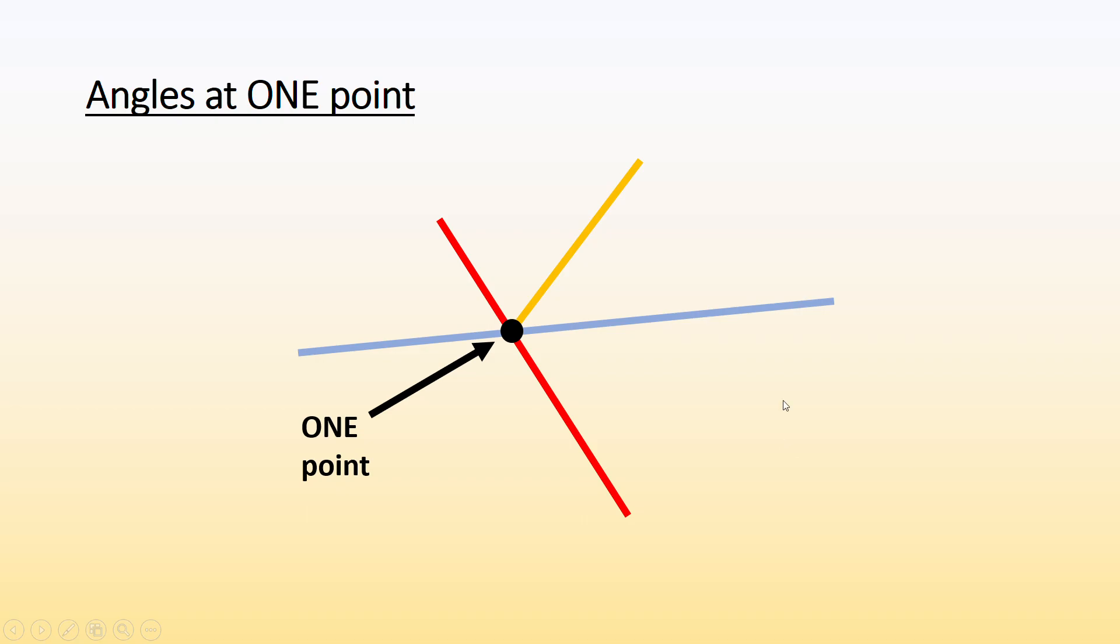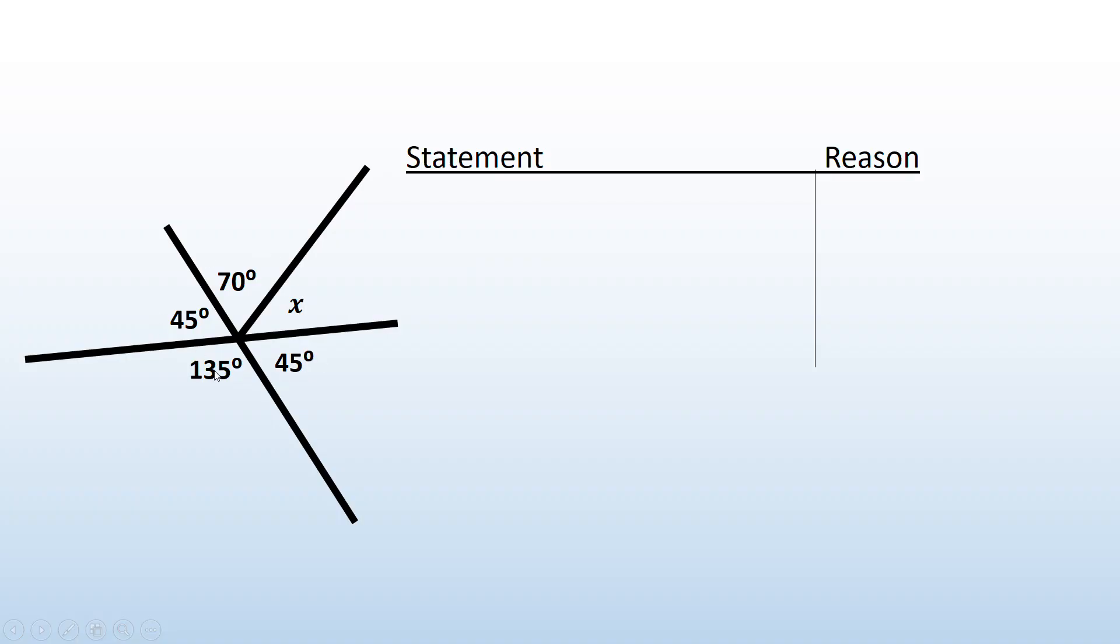There's my point there, and I've got a bunch of different angles around it. I've got one, two, three, four, five different angles around this one point. Here's an example of angles around a point. This is my first reason. This is the way that you write it: angles around a point.